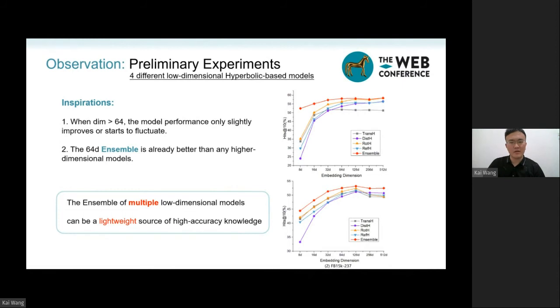we can utilize the low dimensional ensemble as a lightweight source of high accuracy knowledge. And in the ensemble, the four different low dimensional models can be multiple teachers in the knowledge distillation process, such that the last piece of the puzzle is discovered.